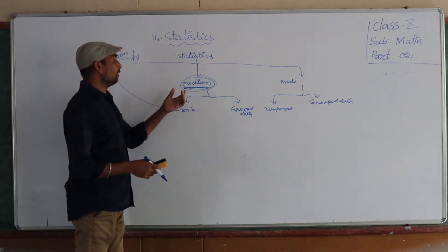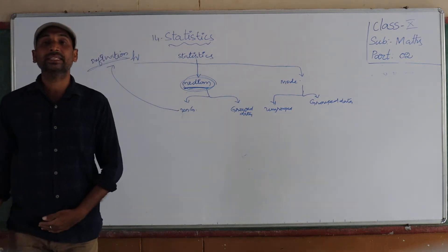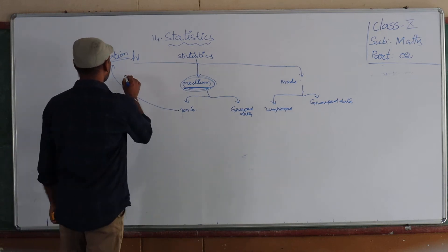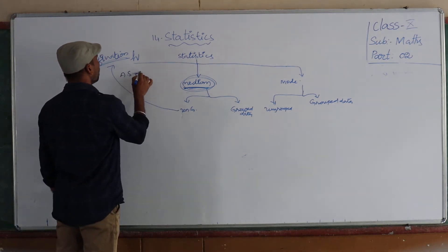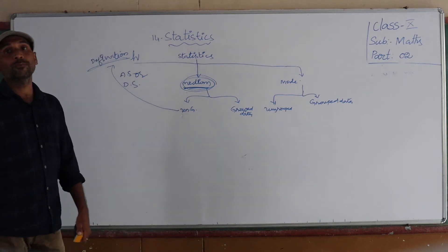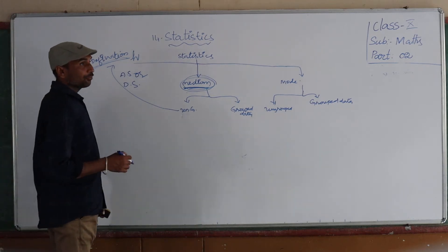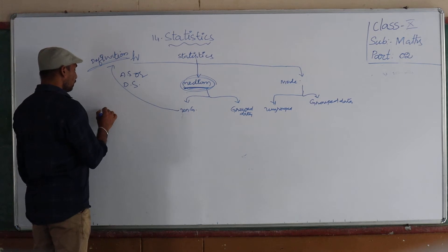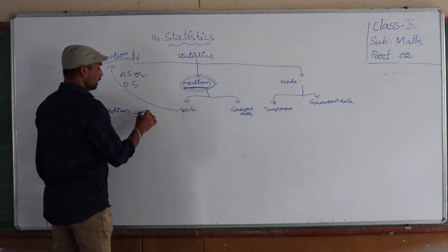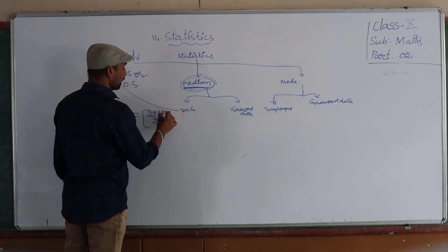So when we are finding the median, first the given data we have to write in the form of ascending or descending order. After finding the ascending or descending order, the middle value is called the median. So median is equal to the (n+1)/2 th observation.